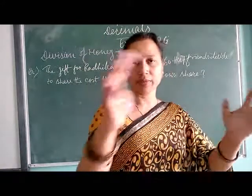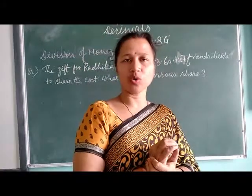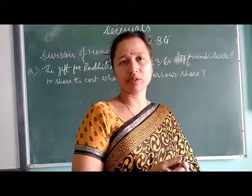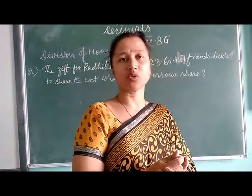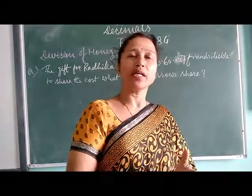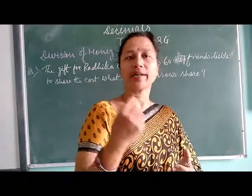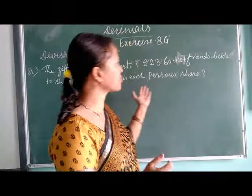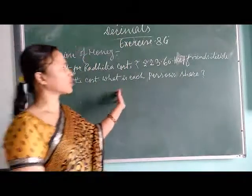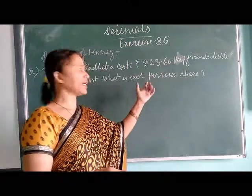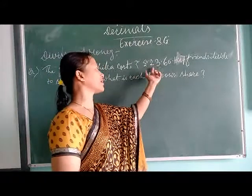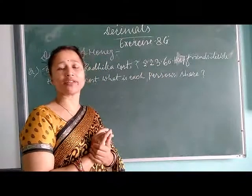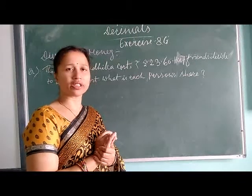Suppose you have 5 friends, and it's a friend's birthday — you want to give a gift. So if you have all 5 friends and collect 100 each, you can get a gift. Similarly, this friend has 7 friends who decide that a gift is worth around 500 pounds.